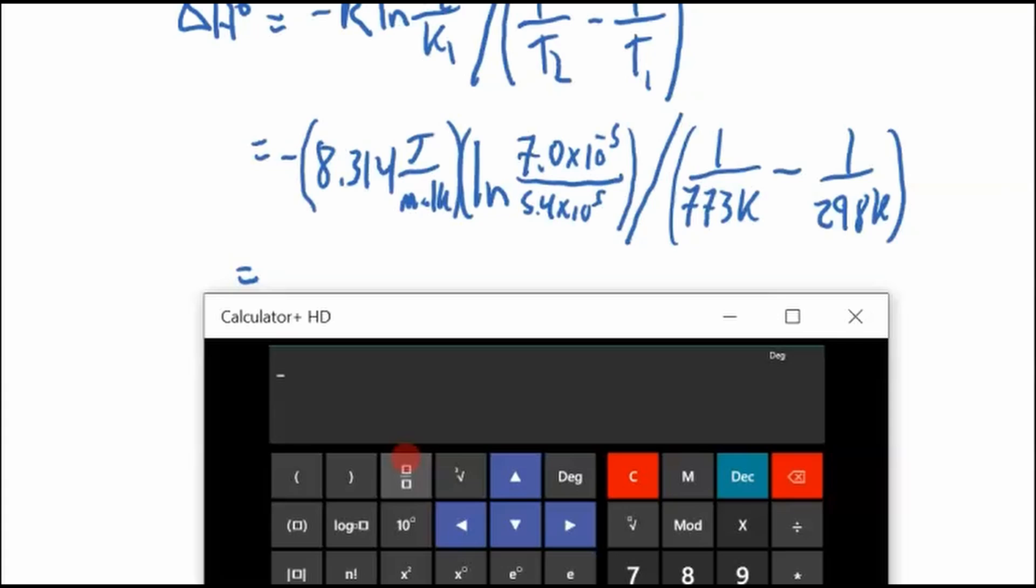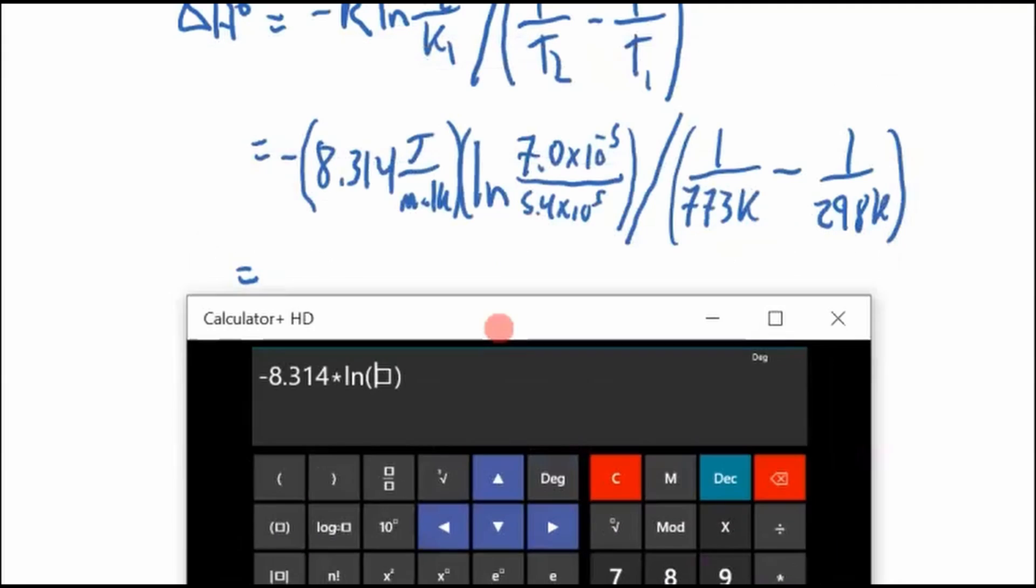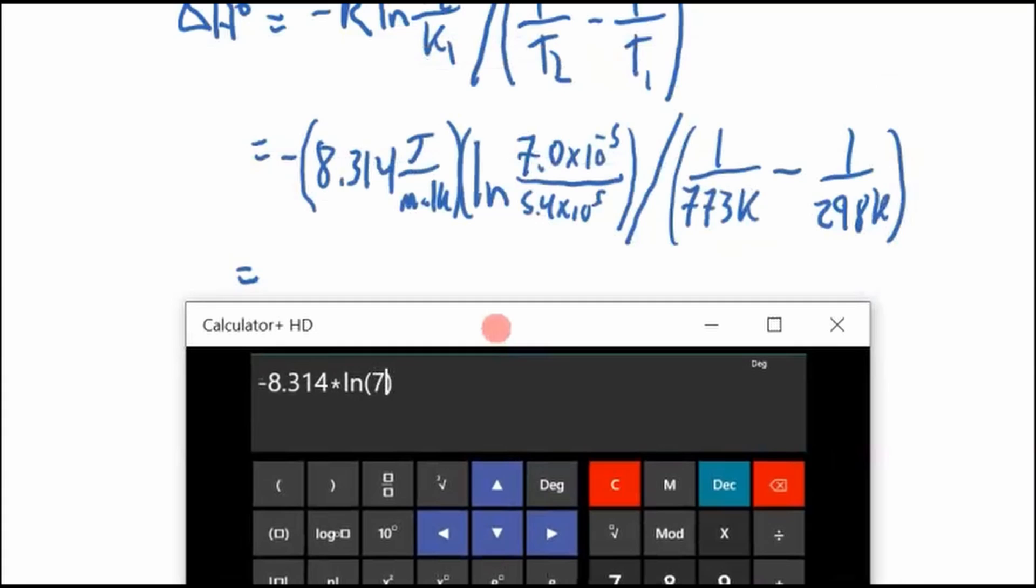So 8.314 times ln of 7 times 10^(-5) divided by, I better put brackets here just in case it does something wonky on me, 5.4 times 10^5. Now I got to do divided by (1 divided by 773 minus 1 divided by 298). I think all my brackets are okay.